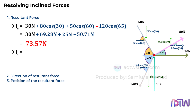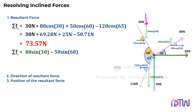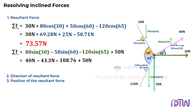Next, we will do the summation of vertical forces. Forces acting upward are positive and those acting downward are negative. The force 80 sine 30 degrees acts upward as positive. The force 50 sine 60 degrees acts downward as negative. The force 120 sine 65 degrees acts downward as negative, and the 50 newtons force acts upward as positive. The summation of all these vertical forces equals minus 62.05 newtons.